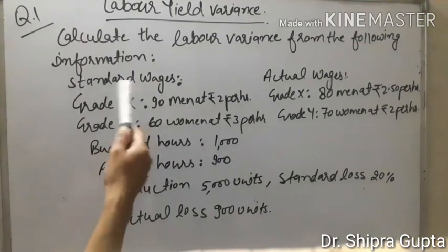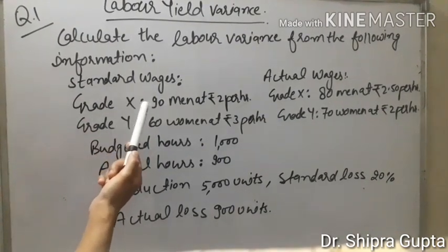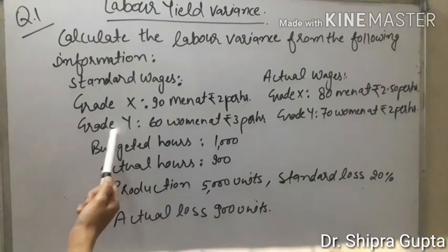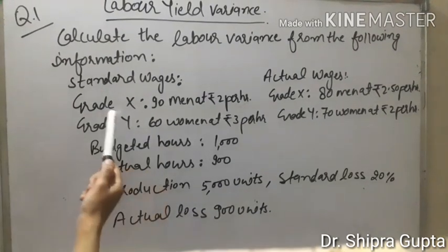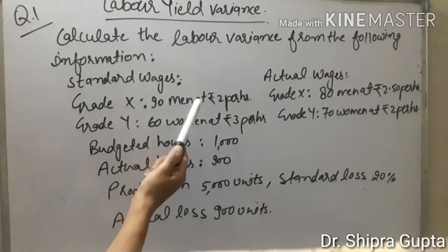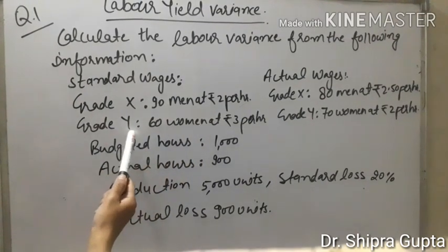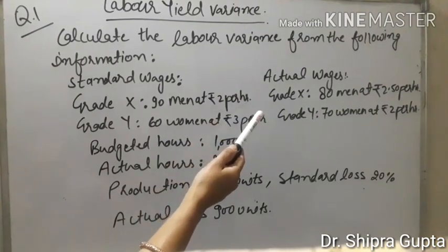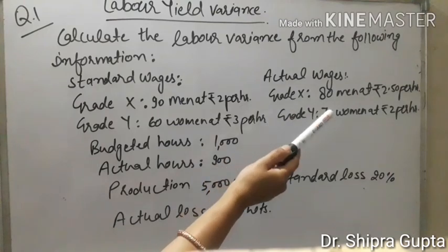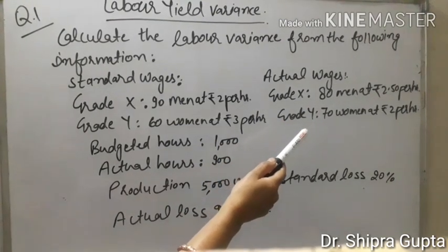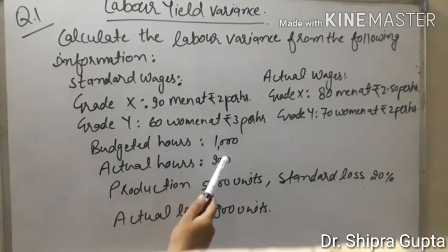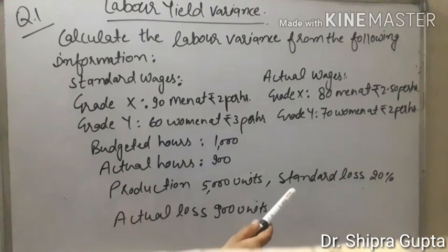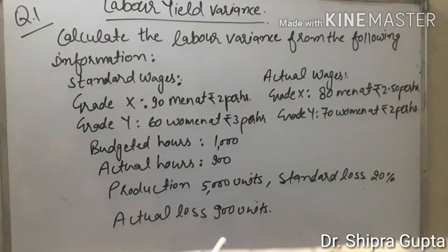Calculate the labor variance from the following information. Standard wages: there are two types of labor — Grade X for men and Grade Y for women. In Grade X, 90 men at Rs. 2 per hour. In Grade Y, 60 women at Rs. 3 per hour. Actual wages: Grade X, 80 men at Rs. 2.50 per hour; Grade Y, 70 women at Rs. 2 per hour. Budgeted hours are 1000 and actual hours 900. Total production 5000 units. Standard loss 20% and actual loss 900 units.